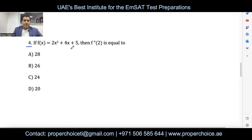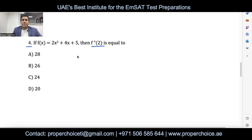Question number four: if f(x) = 2x³ + 4x + 5, find f''(2). The double prime means find the second derivative, then substitute x = 2. Note that the calculator only gives the first derivative directly, so for second, third, or fourth derivatives you must apply the rules one step at a time.